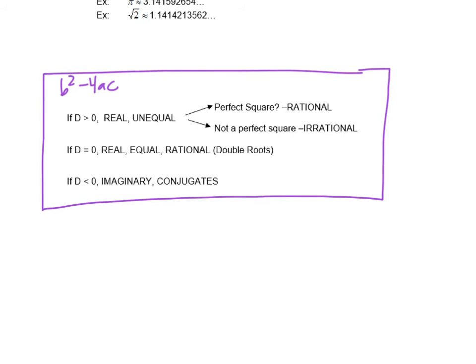If we do b squared minus 4ac and we get, let's say, 10, 10 is not a perfect square number, so we're going to call that irrational.